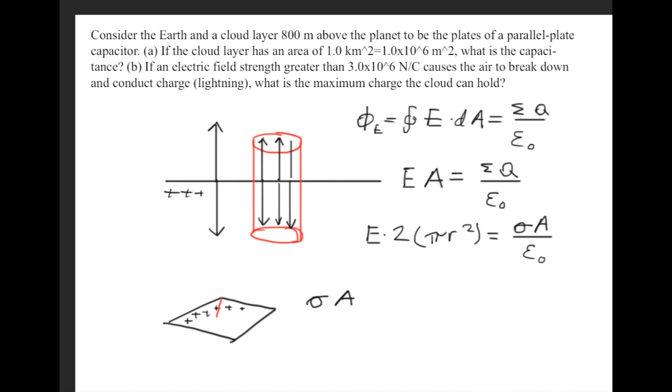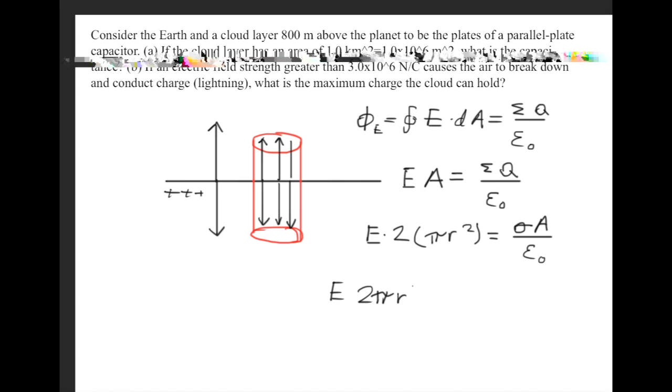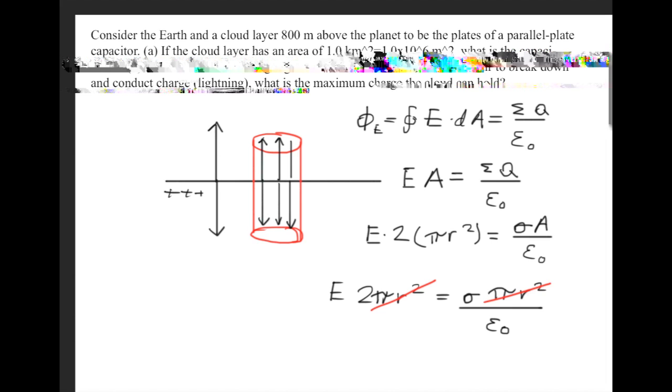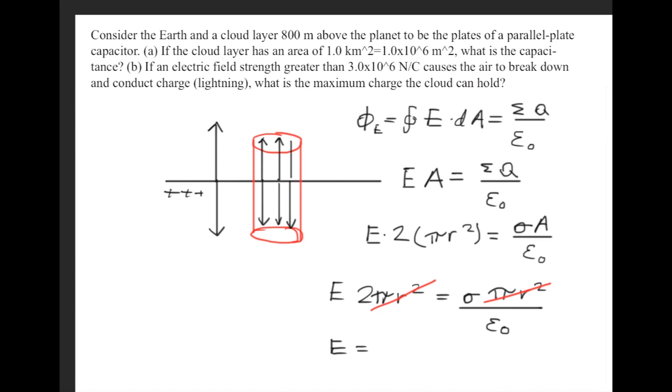And then if you recall, we have the cylinder right here that's passing right through it. So once again, we need to find the area. So we'll get E times 2 pi r squared is equal to the charge density times pi r squared divided by epsilon naught. The pi r squared terms cancel out, and we get that the E-field is equal to sigma over 2 epsilon naught for this conducting plate right here.